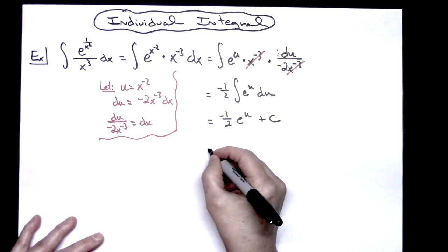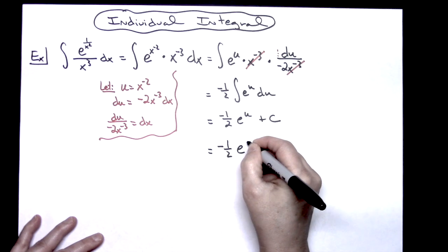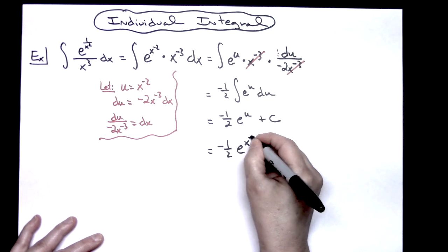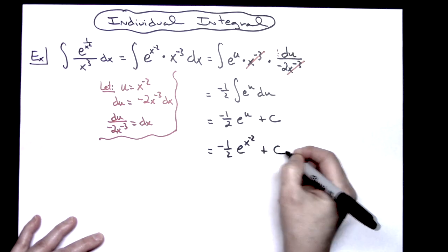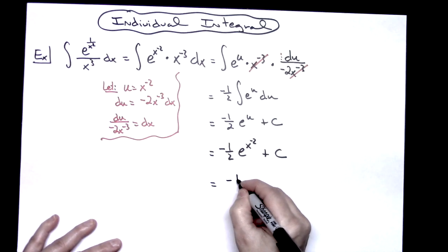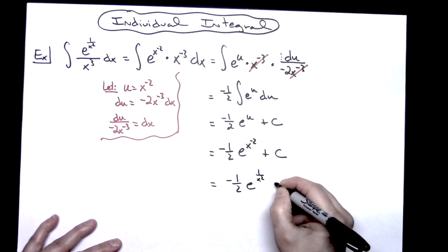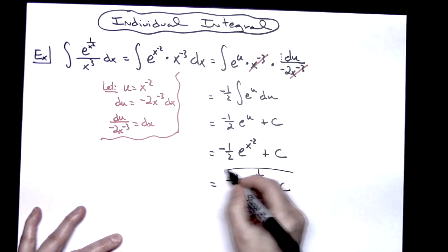Last step would be to take u and replace it, so I'm going to have a negative one half e raised to the x to the negative two plus C. And then if you want to put it back in the same form that you originally had, you'd have a negative one half e raised to the one over x squared plus C.